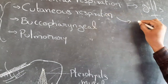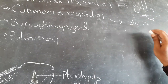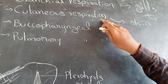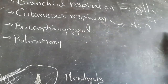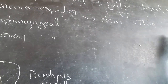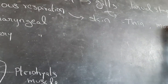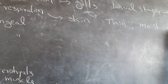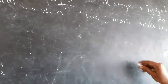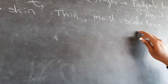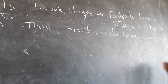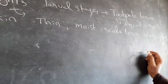Respiration by skin is called cutaneous respiration. In frogs, skin is thin, moist, scaleless, and vascular. Vascular means blood supply.